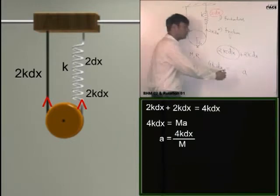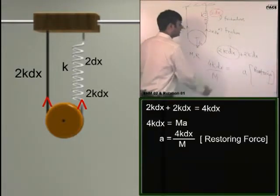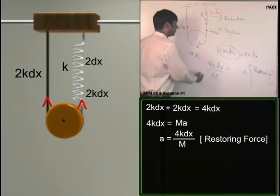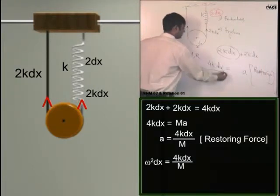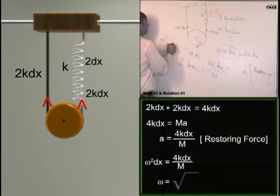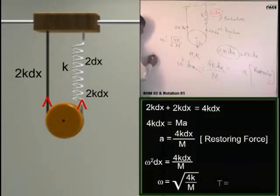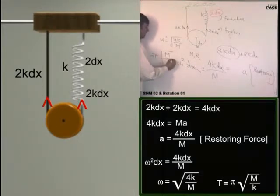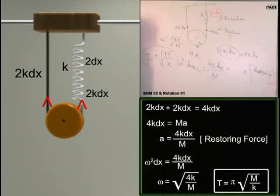So I will write that in words that yes, restoring force, and they are linearly proportional, acceleration is linearly proportional, oppositely directed. So is it SHM or not? Yes sir. If it is SHM put it equal to omega squared dx, dx goes, I get omega is root 4k by M. So time period is 2 pi by omega, 2 pi root M by K upon 2. So how many of you got this answer? Pi root M by K. So no one could get this answer?